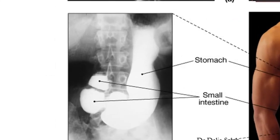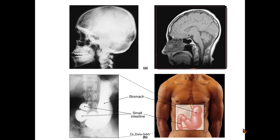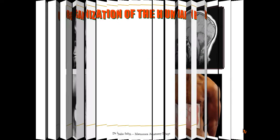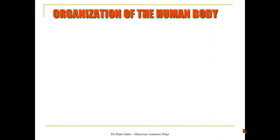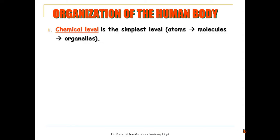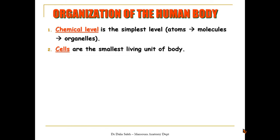We can also use a dye with the X-ray to see the inside of the stomach. For the organization of the human body, on the chemical level the simplest unit is the atoms; they collect together to form molecules, and the molecules collect to form organelles. But the smallest living units inside our body are called cells.